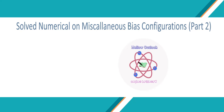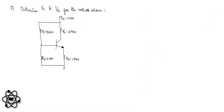Welcome to the tutorial on part 2 of the solved numerical on miscellaneous bias configurations. Here we have a question wherein they have asked us to determine the values of VC and VB for the network shown. The value of VCC is given to be plus 20 volts and the value of VEE is minus 20 volts.